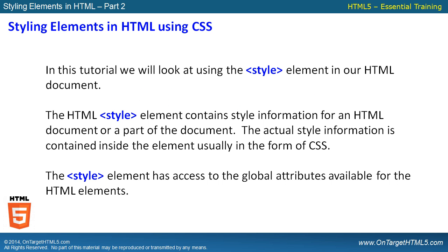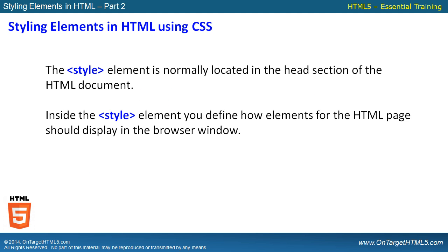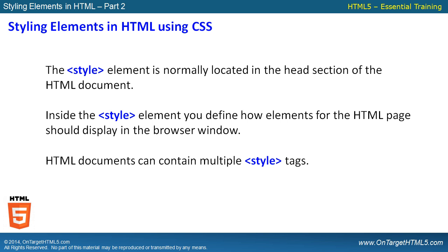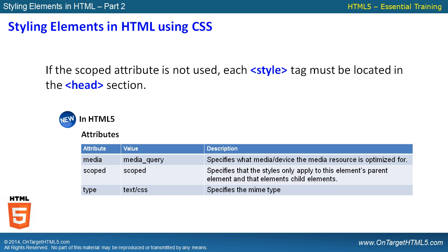The style element has access to the global attributes available for the HTML elements. The style element is normally located in the head section of the HTML document, and inside the style element, you'll find how elements for the HTML page should display inside the browser window. Very similar to what we did with the inline stylings, only this time they're actually going to be in the head section. Although, you will see there are some exceptions that are new in HTML5. HTML documents can contain multiple style tags, and in HTML5, if the scoped attribute is not used, each style tag must be located in the head section.